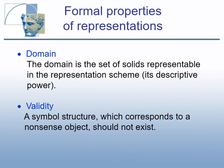The four formal properties are domain, validity, completeness, and uniqueness. Domain D is the set of solids representable in a representation scheme — its descriptive power — answering the question: which solids can be represented in the scheme? Validity: a scheme is valid if a symbol structure corresponding to a nonsense object does not exist. Validity check answers the question: does a representation correspond to at least one object in the domain? If validity is not checked, computation on an invalid model is meaningless and often causes system crashes.